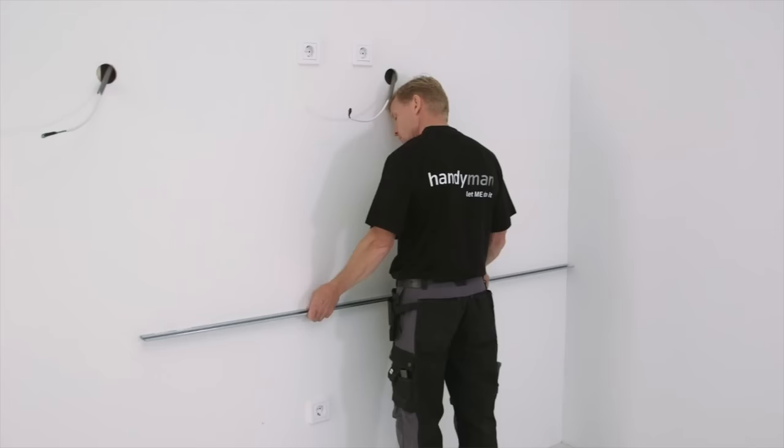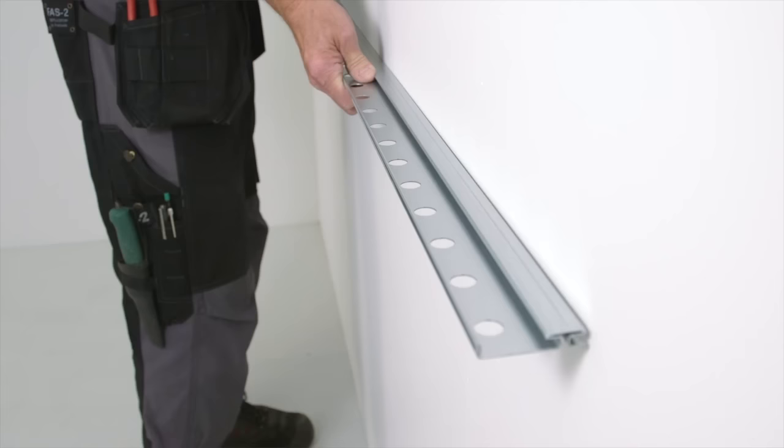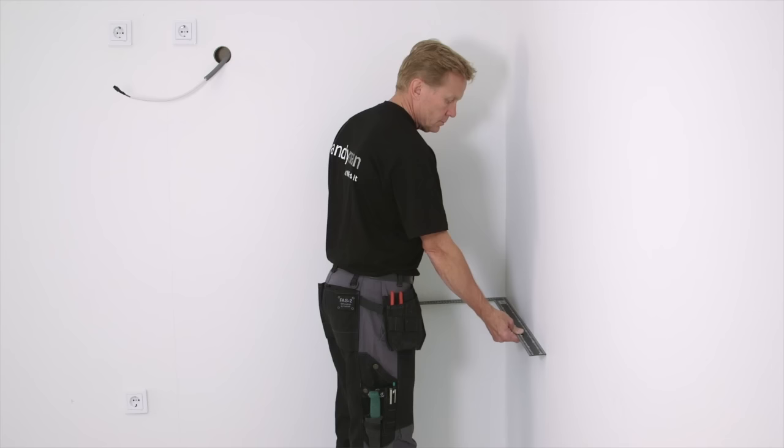To see if the walls are even, you can use a spirit level or the rail. If there is a gap, you will need to make the wall even before fixing the rail or the cabinets to the wall.